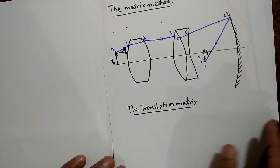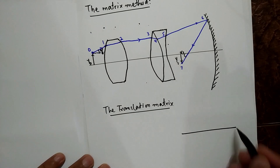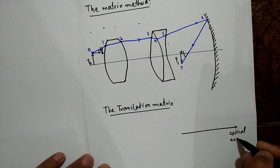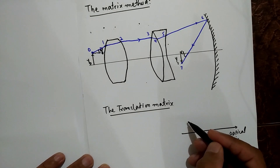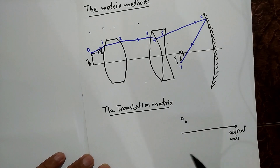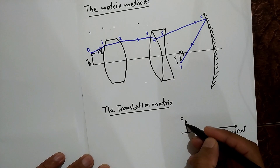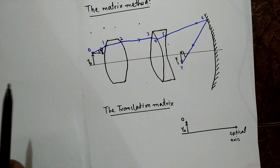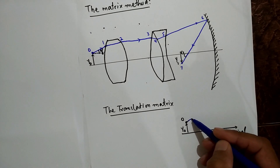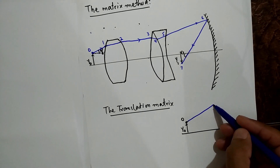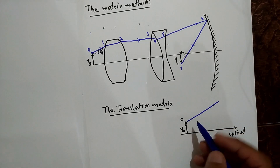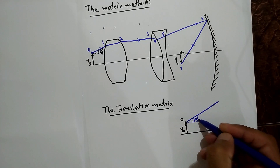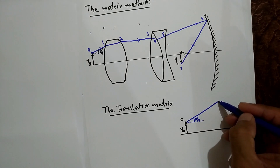Consider an optical axis. We have a point object at point O at height y₀ from the optical axis. A ray of light starts to emerge from the point object, going in a direction such that at the starting point the angle of the ray with the optical axis is α₀. The ray then reaches point 1.